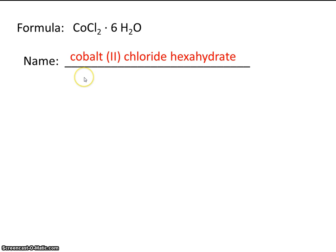Let's make sure we understand this name. Cobalt two. Remember, this two tells us what the charge on cobalt is. Cobalt two chloride. And we needed to say what the charge was using a Roman numeral once again because cobalt is a transition metal. And hexahydrate means six waters.